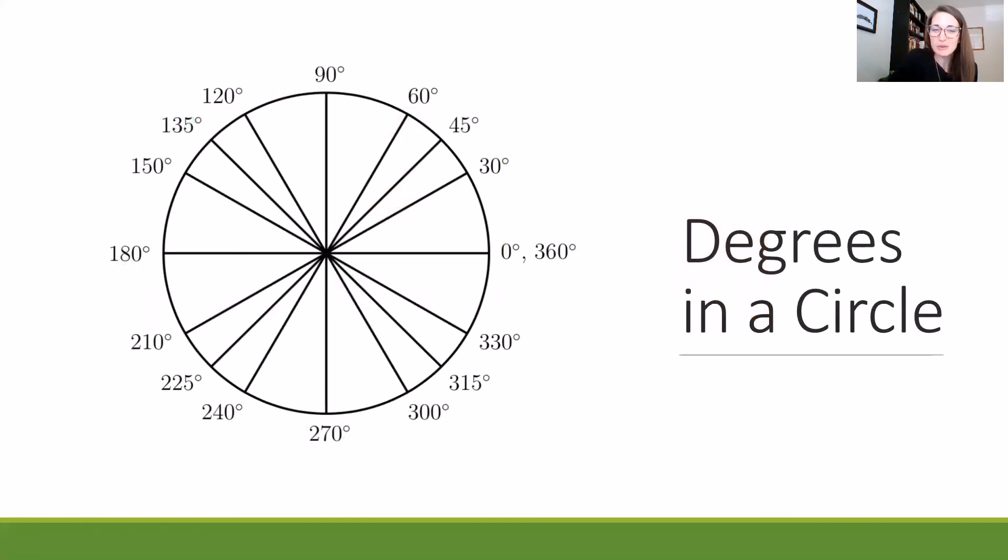The degrees in a circle are also important. Here you can see how the degrees add up. You'll notice that the zero and the 360 share a spot there at the three o'clock level of the circle.